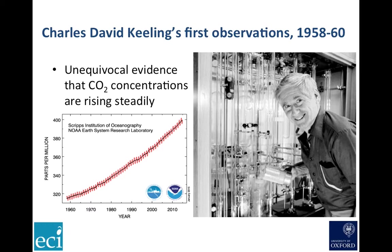The balance between photosynthesis and respiration in the biosphere as a whole is important, and that gives us the annual cycle — that wiggle in the Keeling curve in northern hemisphere CO₂ concentrations — but it cannot account for the overall trend.